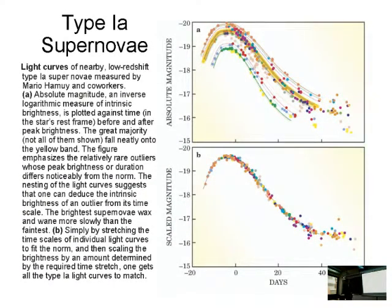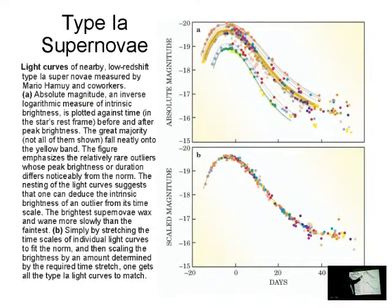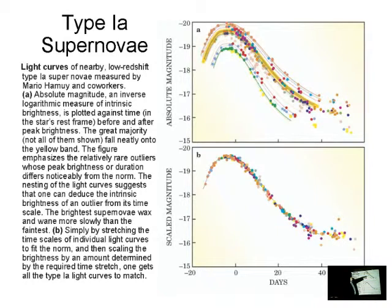Here's the light curve for Type 1a supernovae. A set of nearby supernovae discovered by Hamuy et al. have their light curves plotted — days from the approximate beginning of the supernova versus how absolutely bright they were, using astronomical magnitudes. Most of them lie in a yellow band, but there are a few outliers. The key discovery that made this experiment work much better: if you measure the width — the shape of the supernova light curve — find a parameter measuring that width, and scale the peak brightness by the inverse of that width factor, you find that all the supernovae lie on a very tight curve.